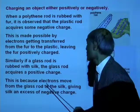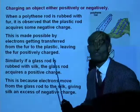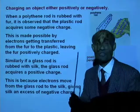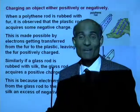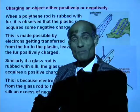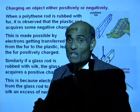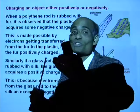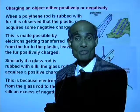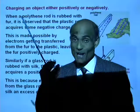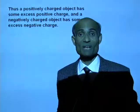When you rub the glass rod with silk, the electrons from the glass rod move to the silk, leaving the glass rod with an excess amount of positive charge. And the silk got some excess amount of negative charge.